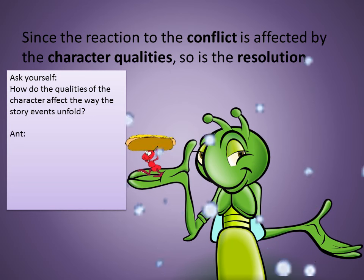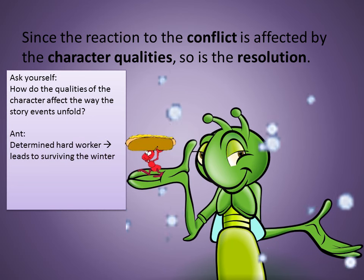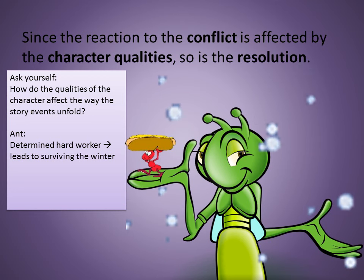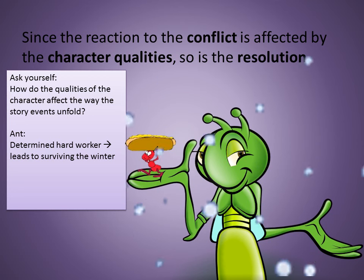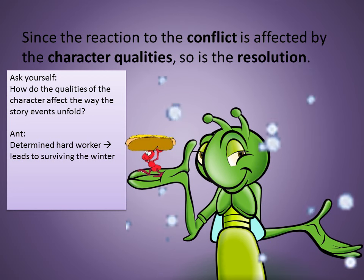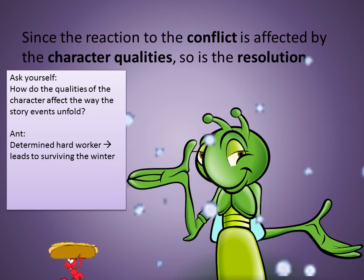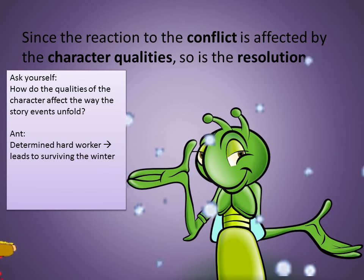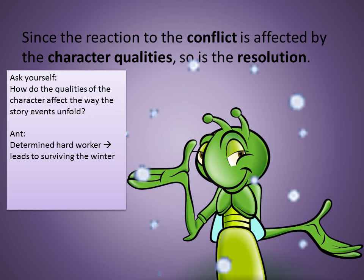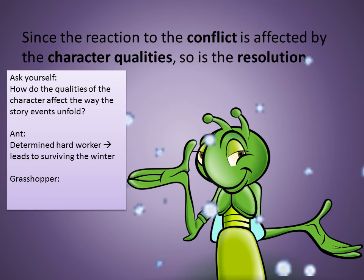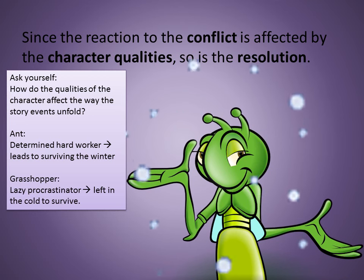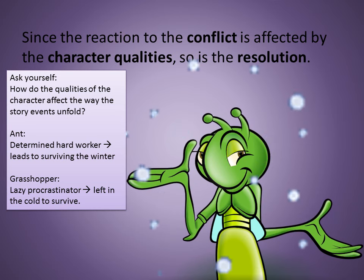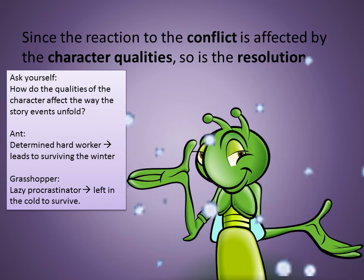Well, for the ant, being a hard, determined worker leads to surviving the winter with plenty of food. While for the grasshopper, being a lazy procrastinator has left him in the cold to survive on his own.